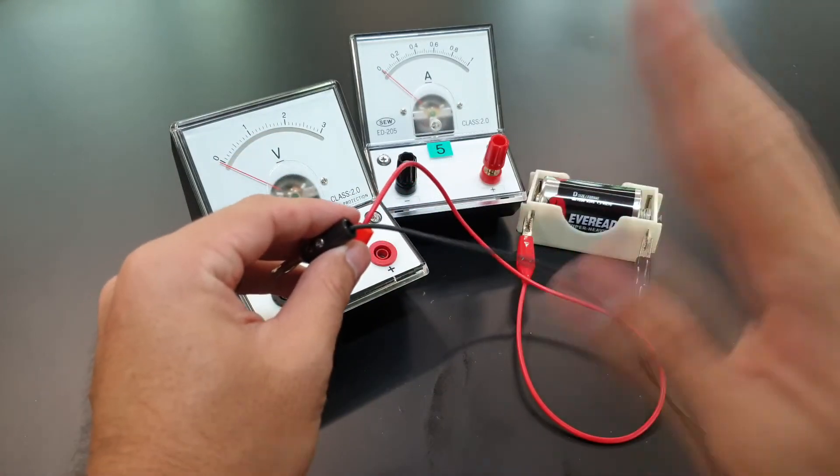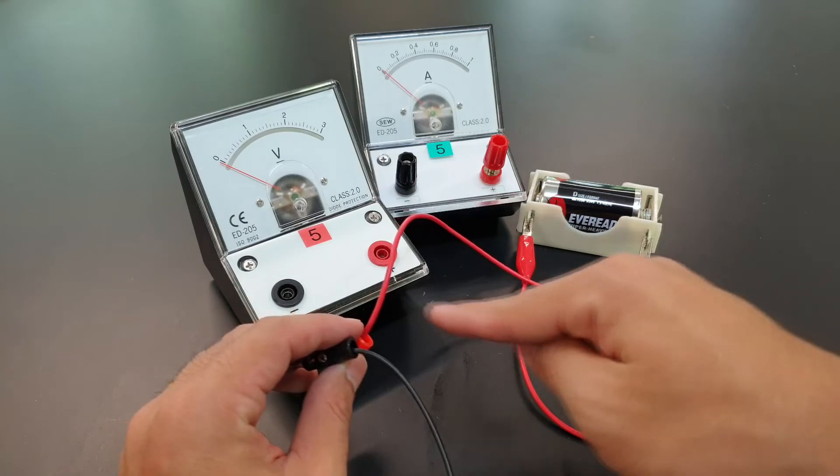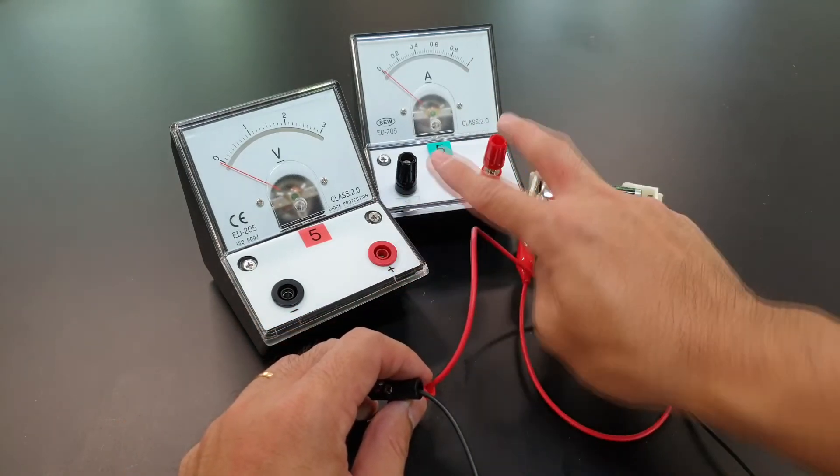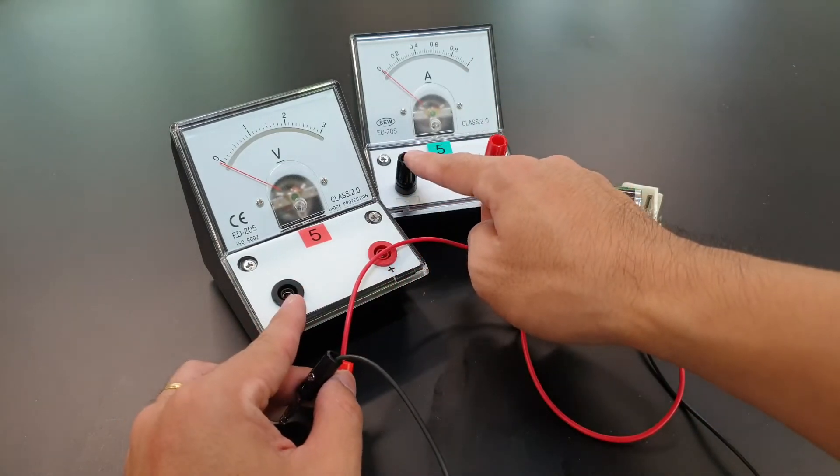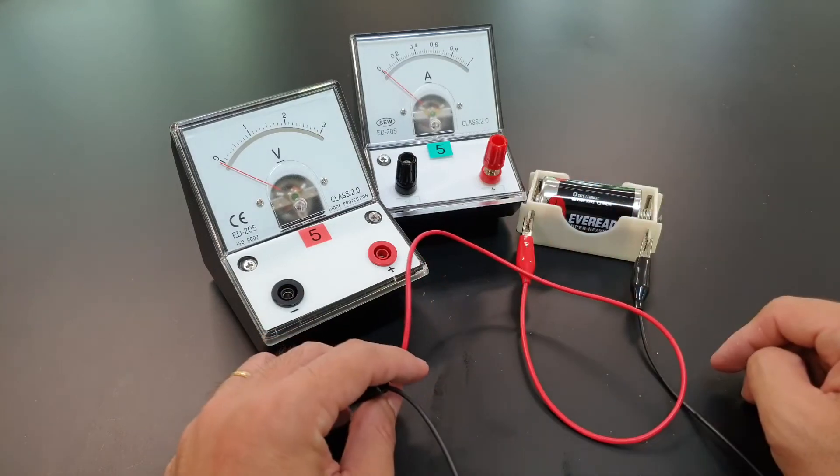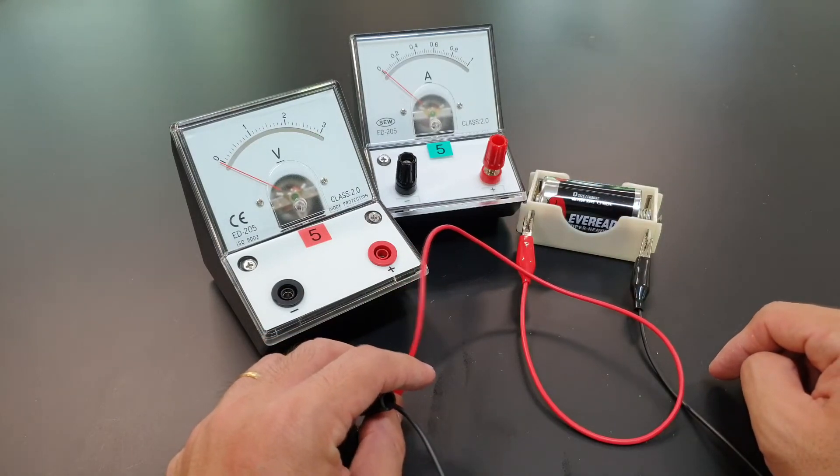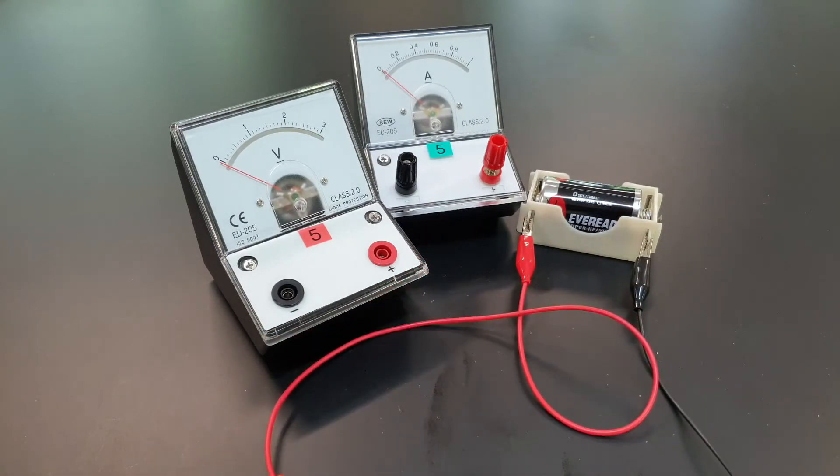Okay, the more important thing is conventional current will flow into the positive terminal of the voltmeter and ammeter and it comes out from the negative terminal of the meters.